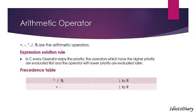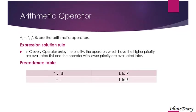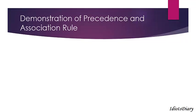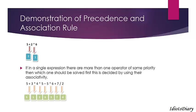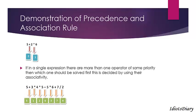We will discuss about the association rule in some next examples. Here are some examples based on the precedence and association rule. In this expression, multiply enjoys higher priority than plus, so multiply is executed first and plus is executed later.